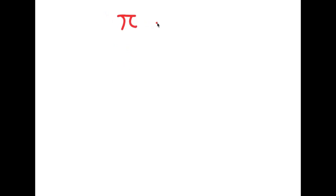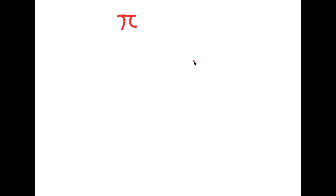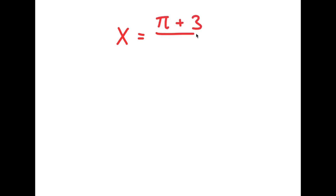So in this video, I'm going to be proving to you guys that pi is equal to 3. As you guys probably already know, pi is an irrational number, meaning it doesn't have a whole number value — it's actually equal to 3.14159 and on and on forever. So in this video, I'm going to be proving that pi is actually equal to 3. What I'm first going to do is start with the statement x is equal to pi plus 3 over 2.